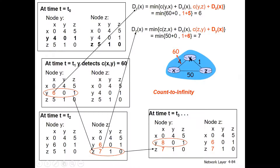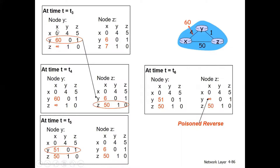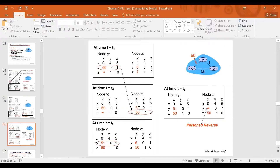If you use the truth — poison reverse — you will block the loop. Z is set equal to infinite. So the exit cost is 60 for X, and the link cost will be updated. The exit cost becomes infinite, and on the other hand, the exit cost is 0. The link cost does not change, so the exit cost is 0.